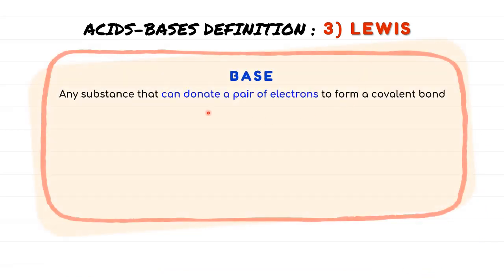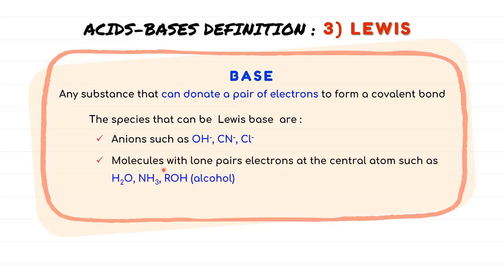Base is substance that can donate a pair of electrons to form a covalent bond. In other words, species with more electrons in its Lewis structure. So example of base according to Lewis can be grouped into three. They are anions such as OH-, CN-, or Cl-, and then molecules with lone pair electrons at the central atom such as H2O, NH3, or any other alcohol. And lastly, the molecules with non-polar multiple bonds such as alkene, the carbon-carbon double bond.